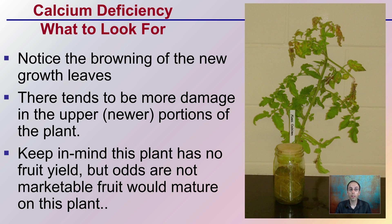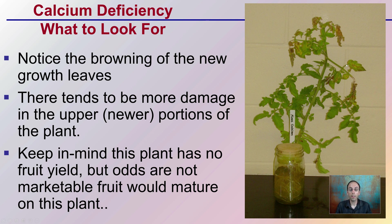This is a perfect example of what calcium deficiency actually looks like in a tomato plant — and this is a severe case, even before we get to the actual fruit. Notice the browning of the new leaves; this newer growth has that browning occurring. There tends to be more damage to the upper or newer portions of the plant, which is one characteristic of a calcium deficiency. Keep in mind this plant has no fruit yield, so the odds of having marketable fruit are very low when you're seeing these symptoms even before you get flowers.